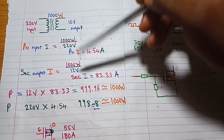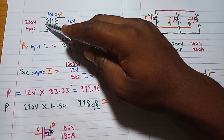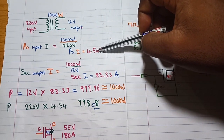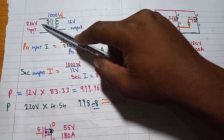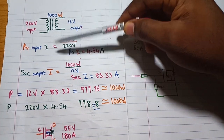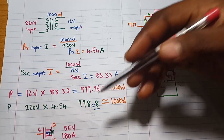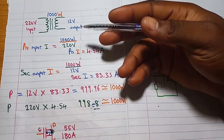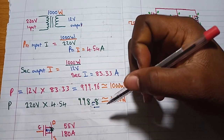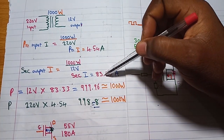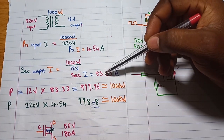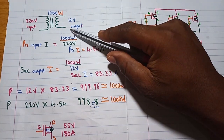Once we put a load of up to 1000 watts on the output side, which draws a maximum of 4.54 amps at the output, it will cause 83 amps of current to flow on the primary side through the MOSFET and the battery. We are going to do the calculation in this video. So how do we select a suitable MOSFET to match this 1000-watt inverter design? Since we are expecting 83 amps to flow here, we need a MOSFET that can handle that 83 amps.